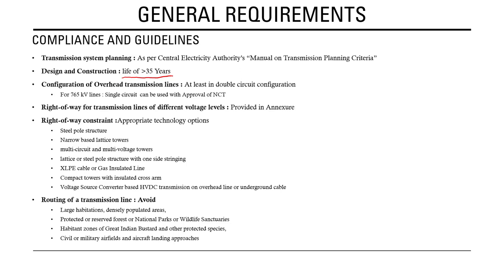After 35 years, options such as reconductoring, changing towers, or other technology options are available for extending the life of the transmission system. Regarding the configuration of overhead transmission lines, it should always be at least a double circuit configuration. Quad circuit or multi-circuit configurations are also possible. For 765 kV lines, a single circuit is allowed but requires approval from the National Committee on Transmission.